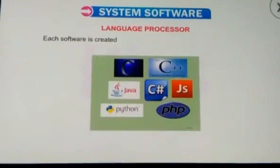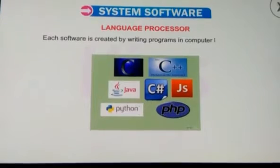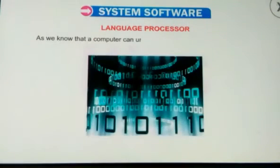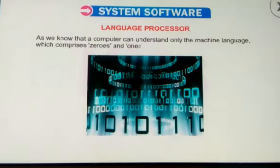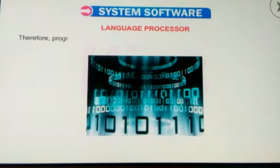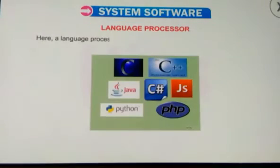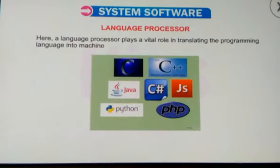Language processor: each software is created by writing programs in computer languages. Some of the popular computer languages are Java, C, and C++. As we know, a computer can understand only the machine language, which comprises zeros and ones. Therefore, programs written in these languages cannot be recognized by a computer. Here, a language processor plays a vital role in translating the programming language into machine language.